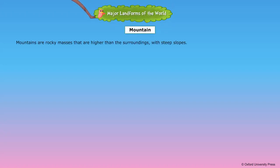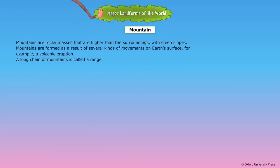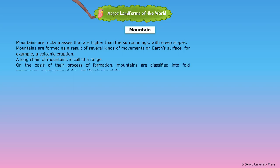Mountains are rocky masses that are higher than the surroundings with steep slopes. Mountains are formed as a result of several kinds of movements on Earth's surface, for example, a volcanic eruption. A long chain of mountains is called a range. On the basis of their process of formation, mountains are classified into fold mountains, volcanic mountains, and block mountains.